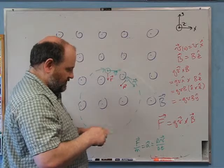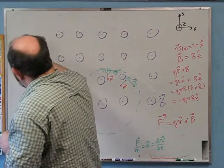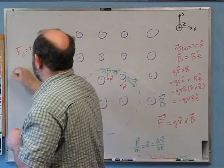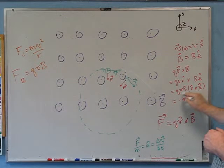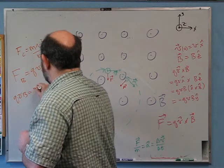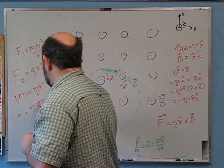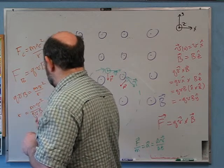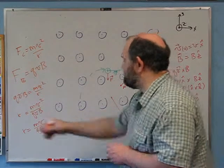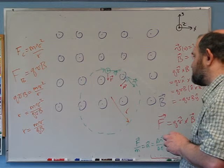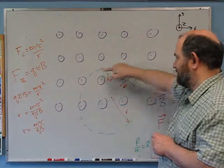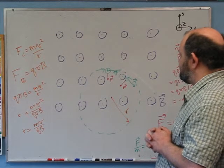We can find the radius of the circle. The centripetal force needed is mv²/r, and the magnetic force magnitude is qvB. Setting them equal: qvB = mv²/r, so r = mv²/(qvB) = mv/(qB). Here m is the particle's mass, v its speed, q its charge, and B the magnetic field strength. This only works for a uniform magnetic field — B must be the same everywhere for the force to have constant magnitude.